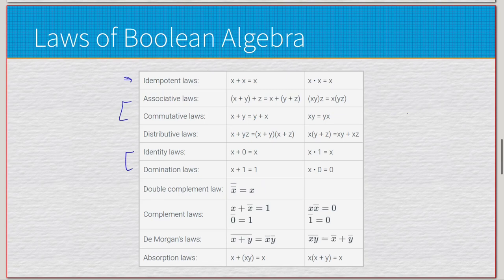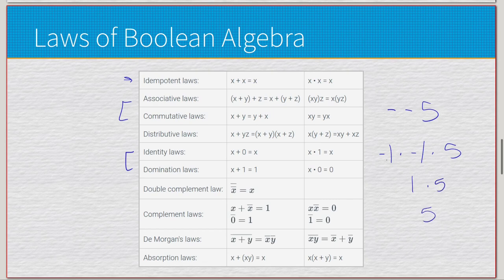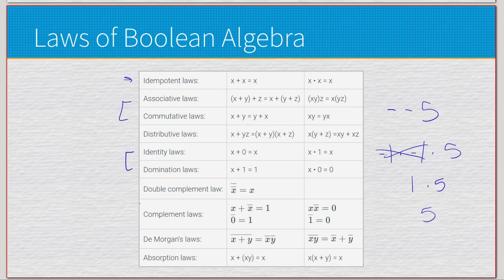The double complement law is similar to negative negative five in regular algebra canceling out to give you five. Two complements cancel each other out. It's also called the double involution law — if you complement the complement of something, the complements cancel and you're left with the original value. This happens more often than you might think, especially when applying distributive or De Morgan's law during optimizations.